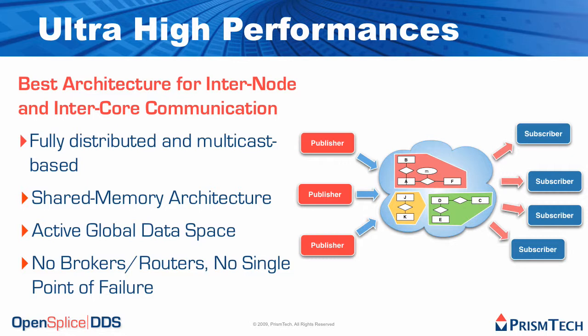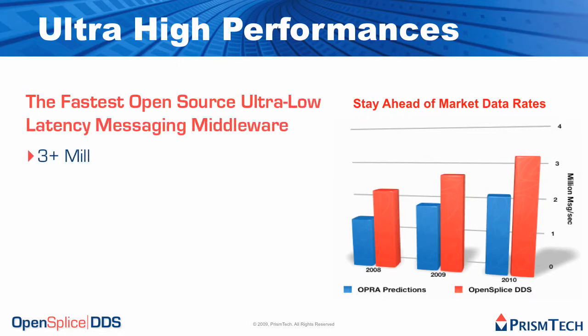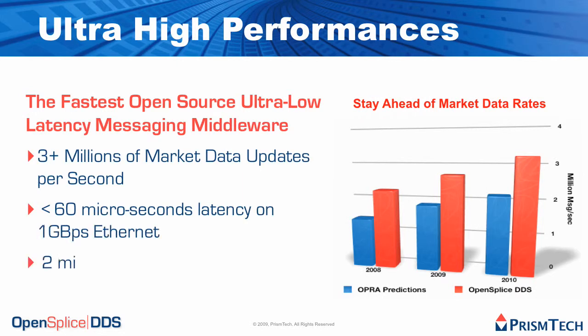It supports shared memory architecture, which is very important for minimizing inter-core communication. It is based on the model of an active data space and it has no brokers, no routers, no single point of failure, no intermediary node. In terms of numbers, OpenSplice DDS is the fastest open source ultra-low-latency messaging middleware. It can deliver over 3 million market data updates per second.